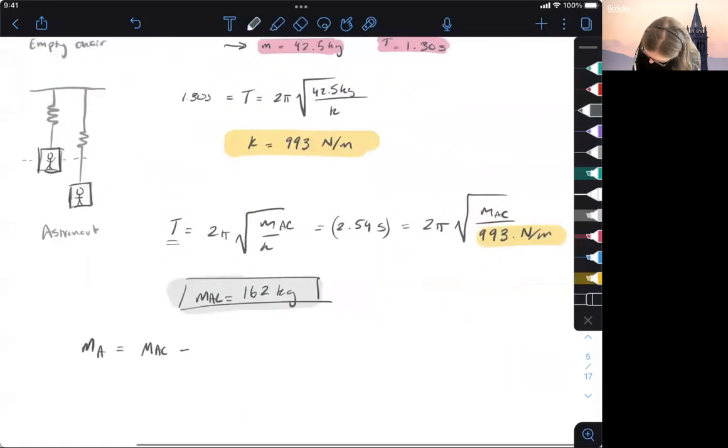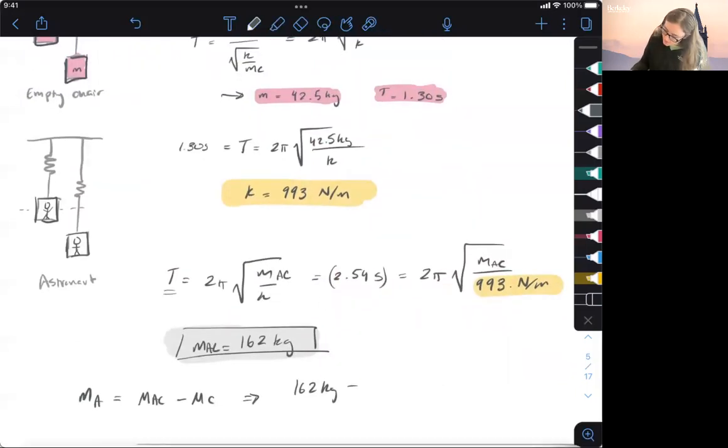So M_AC minus M_C is going to be equal to the mass of the astronaut. So 162 kilograms minus 42.5 kilograms is going to give me 120 kilograms.